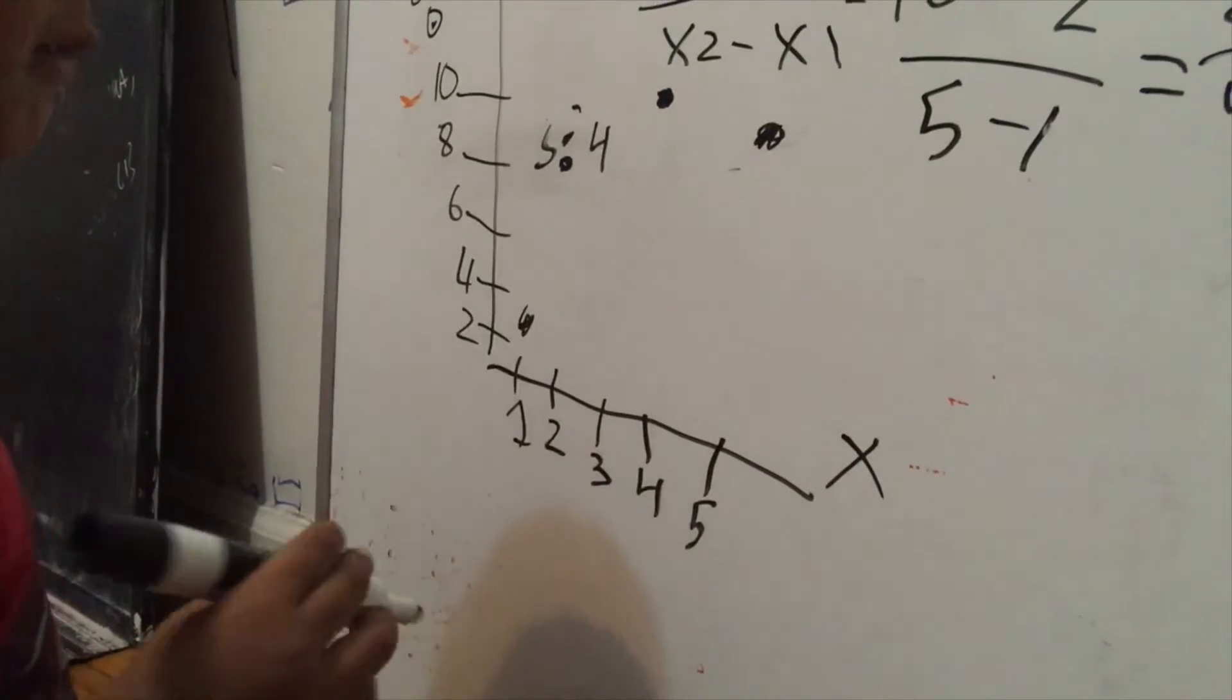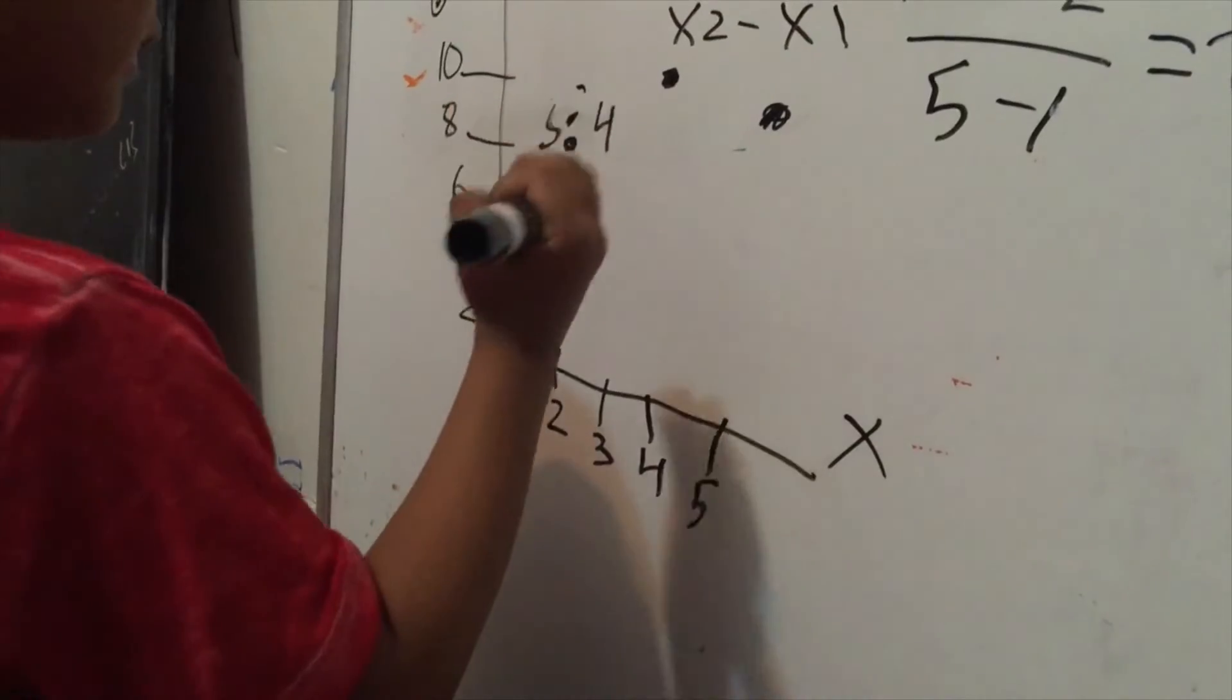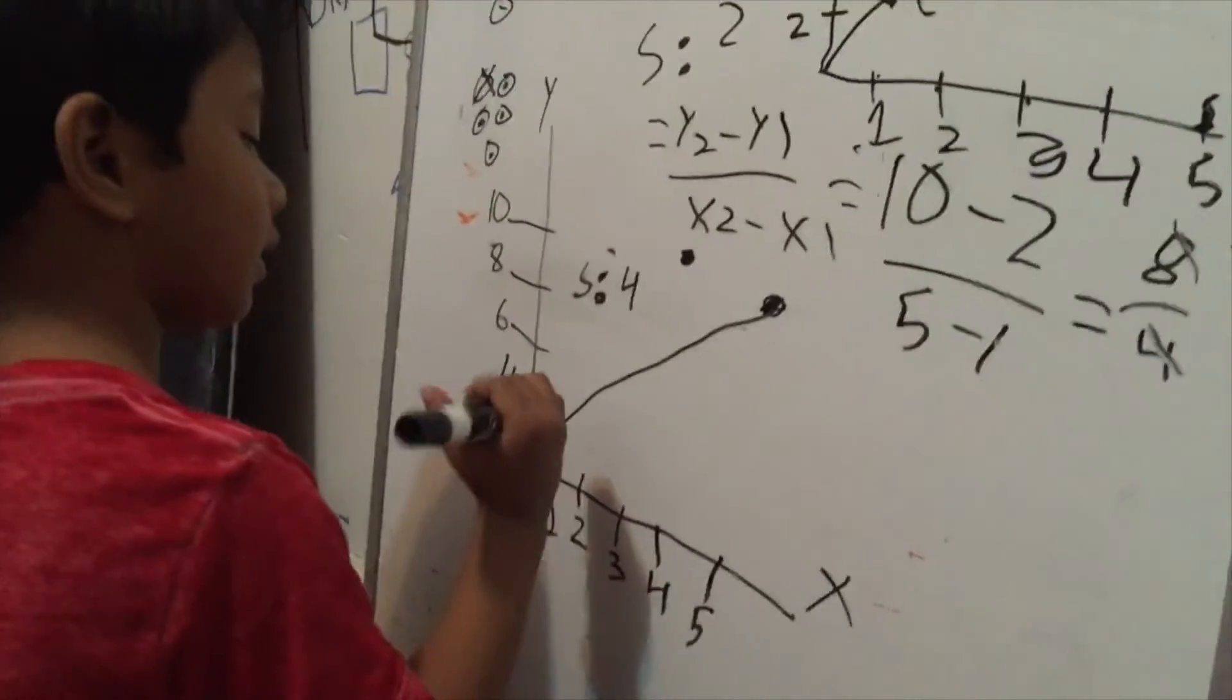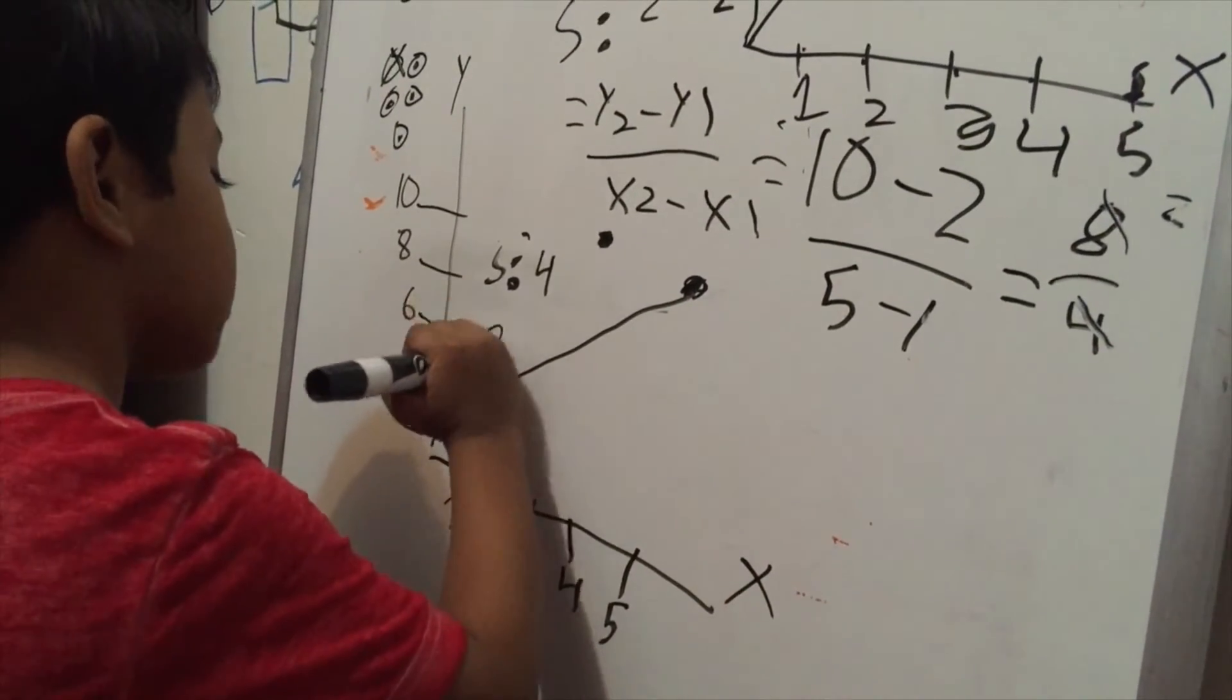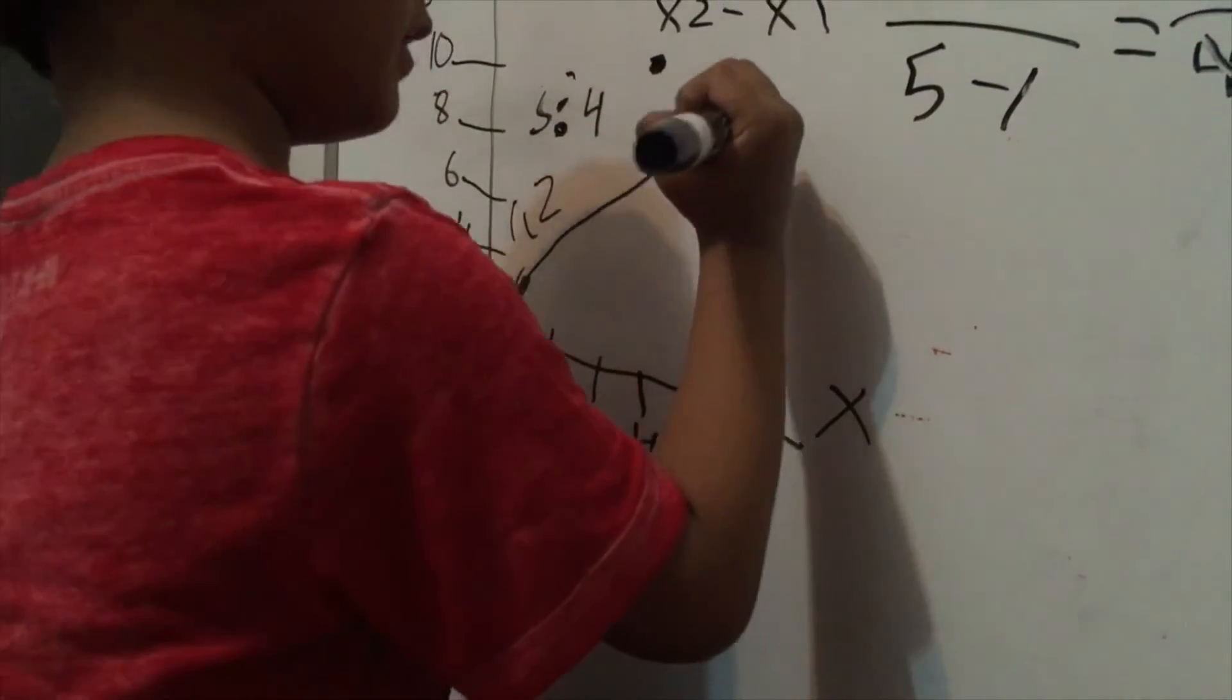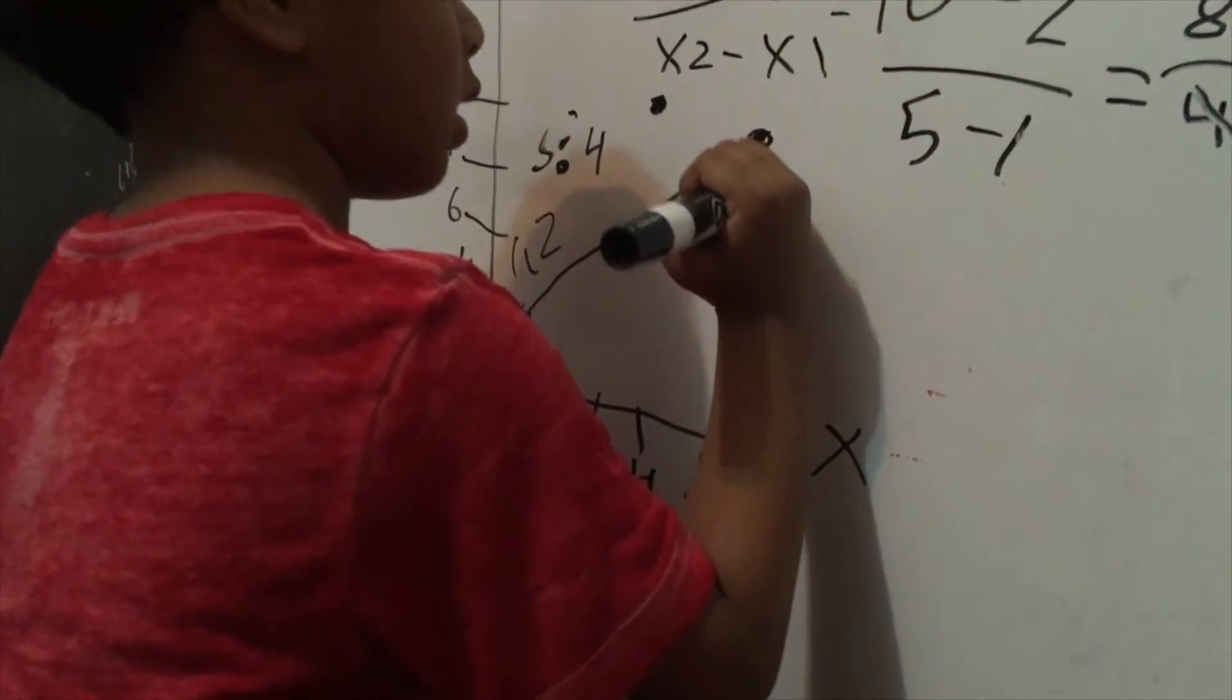Isaac has 2 points. Isaac's gonna connect it to 1. The other point is 5, 10.